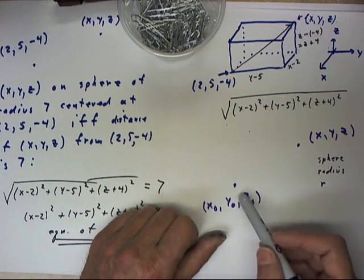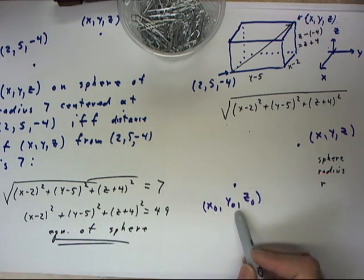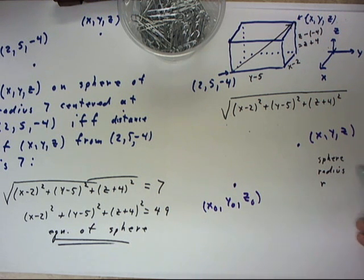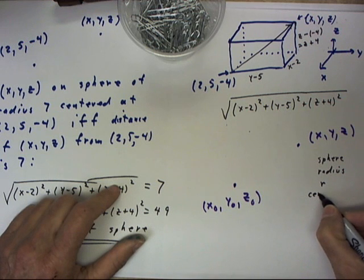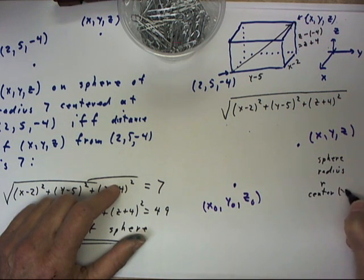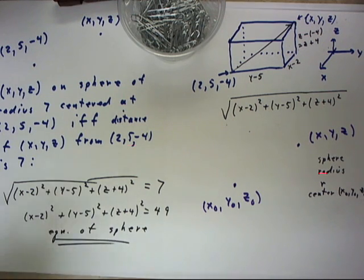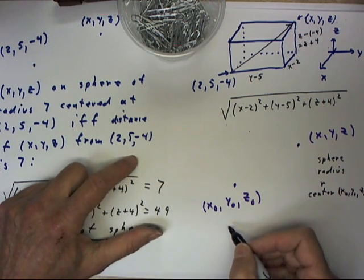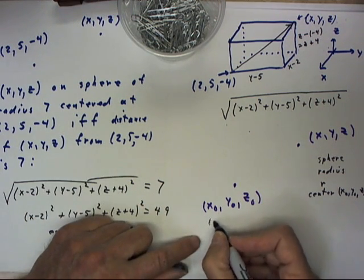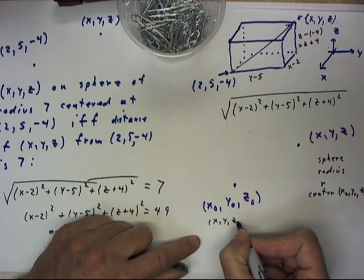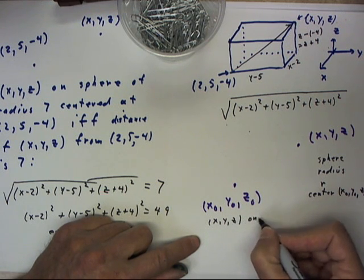Now, if we want to have a sphere centered at x0, y0, z0, a sphere of radius R with center x0, y0, z0, then we can say that the point x, y, z is on the sphere